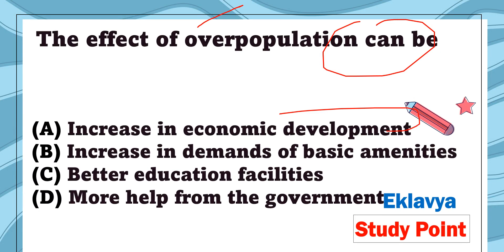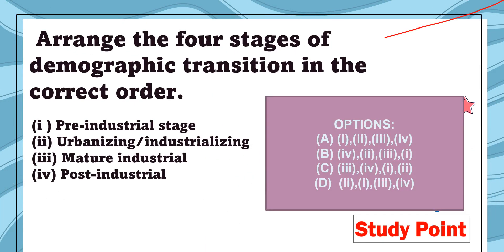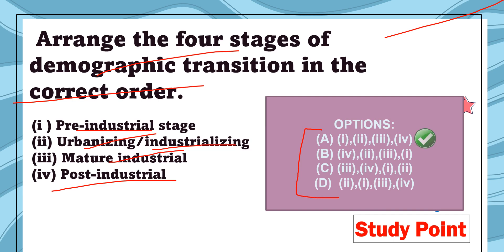Question 28: The effect of overpopulation can be — increase in economic development, increase in demands of basic amenities, better education facilities, or more help from the government. The correct answer is increase in demands of basic amenities, because when there is overpopulation, the demand for basic needs and amenities increases. Question 29: Arrange the four stages of demographic transition in correct order — pre-industrial, urbanizing/industrializing, mature industrial, post-industrial. The correct answer is option A: this sequence (1-2-3-4).